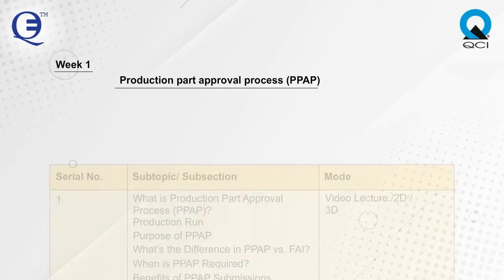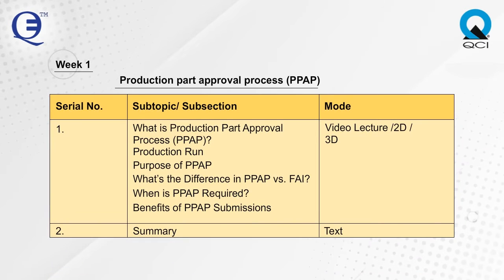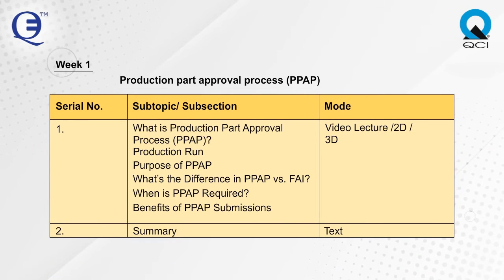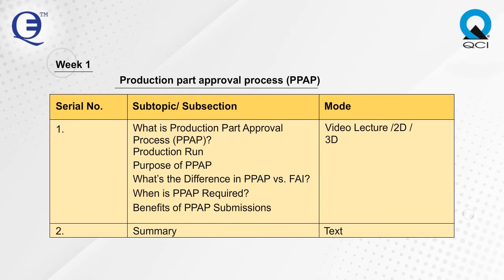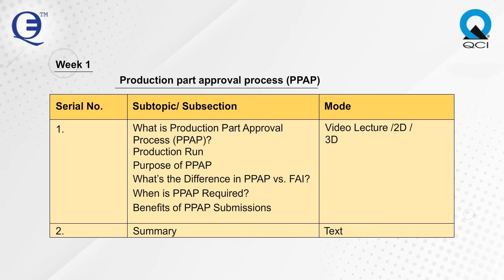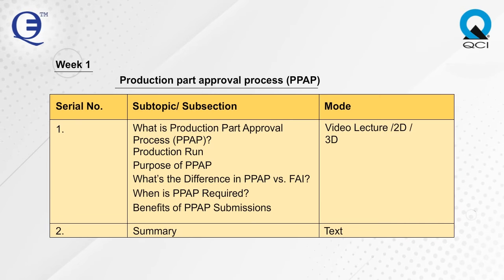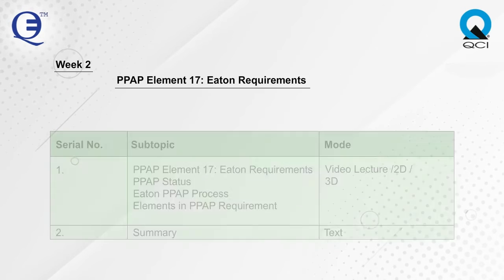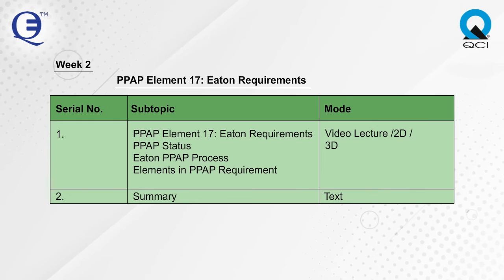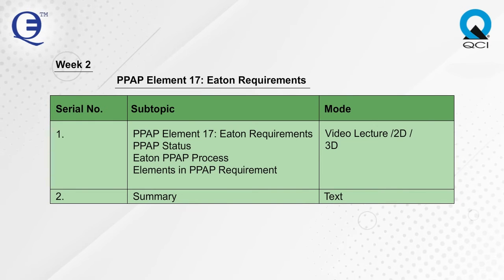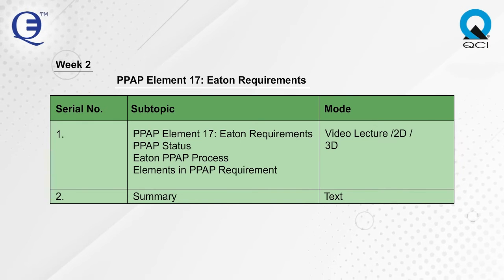Topics covered week-wise: Week 1 covers what is the Production Part Approval Process (PPAP), production run, purpose of PPAP, what's the difference between PPAP and FAI, when is PPAP required, and benefits of PPAP submissions.